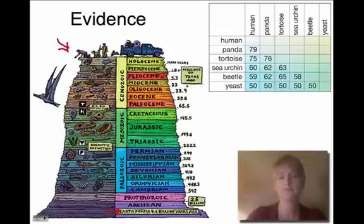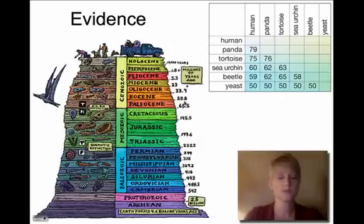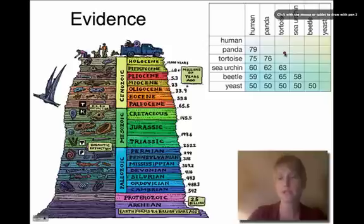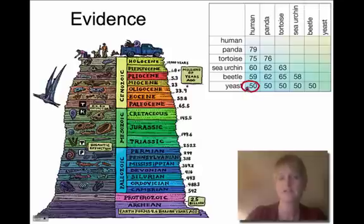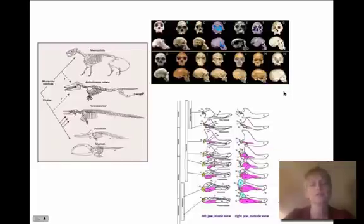Another thing that we will compare is genetic sequences. We might be looking at a chart of genetic sequences and see that there are 50 similarities between a human and a yeast, 59 similarities between a beetle, and so on and so forth.